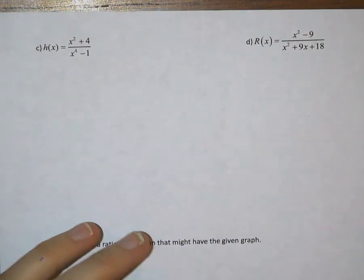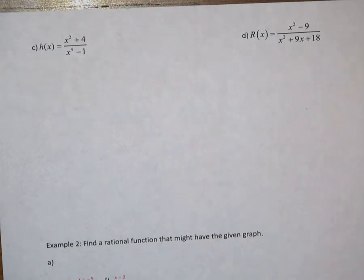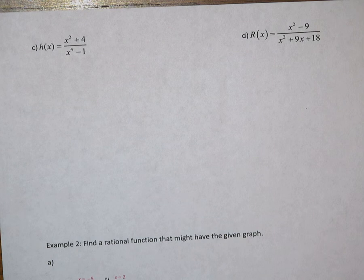Hello Precalculus students, this is Miss Robinson. We are continuing with example 1c in section 4.5. In 1c we're given another rational function. This time h of x equals x squared plus 4 over x to the 4th power minus 1. We're still using those same 7 steps to analyze the graph of this rational function.